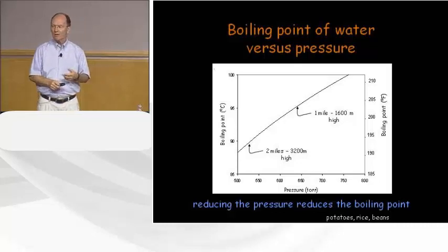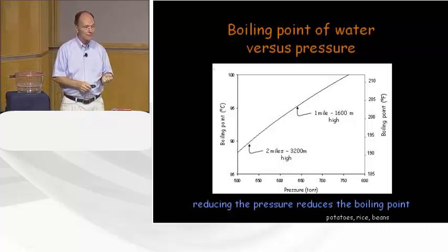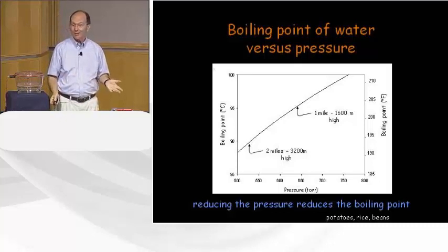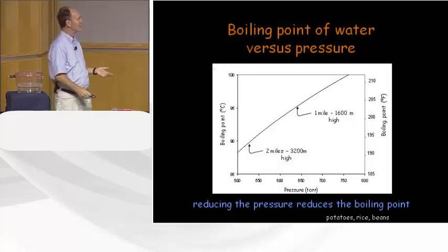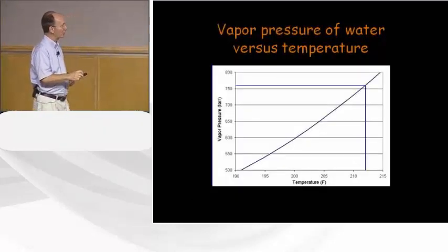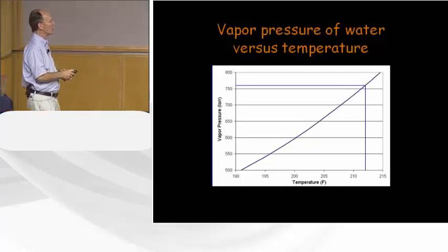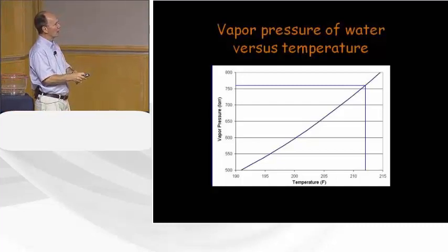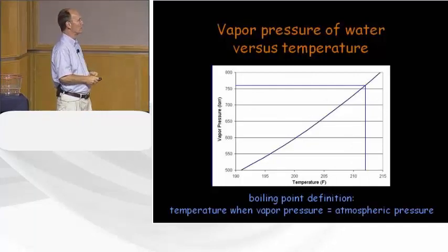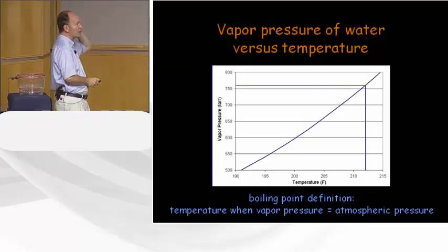So what happens if you're cooking potatoes, rice, or beans in boiling water in Denver? The boiling point is lower, so you have to cook it longer. I'm going to do a mathematical trick and change the axes to logarithmic. This allows us to compress the axes dramatically. It's the same data, but now I can show three decades of pressure and two decades of temperature — and that's the same data compressed further.